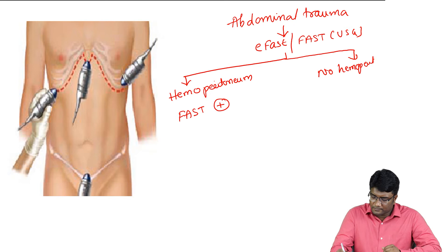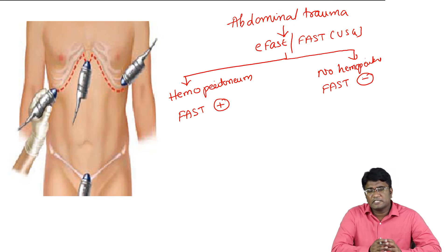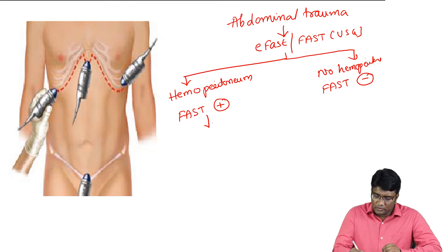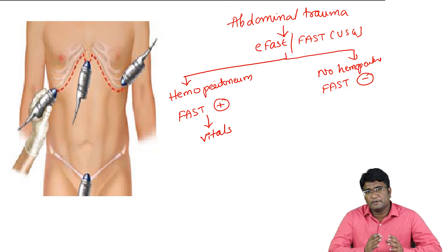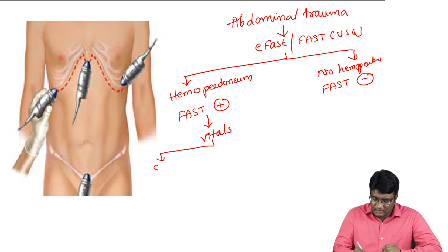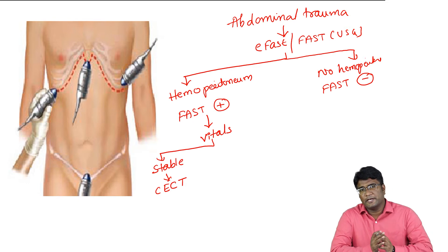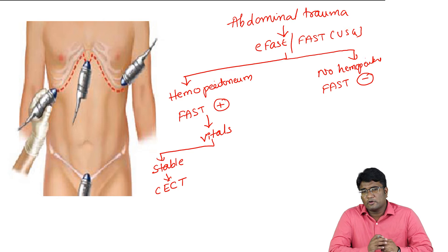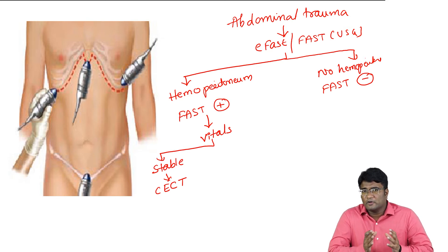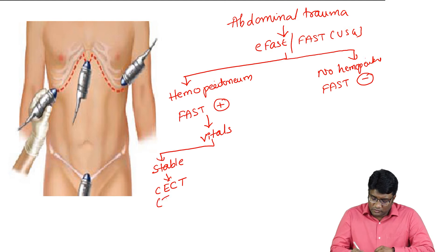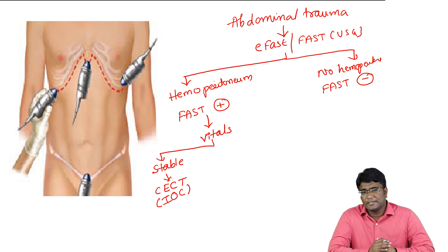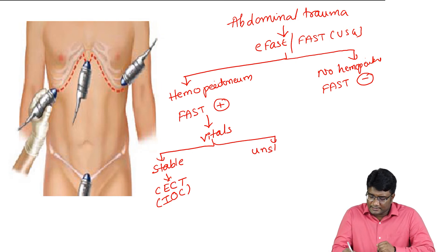If FAST is positive — if there is fluid in the abdomen on ultrasound — the next step is to check the vitals of the patient: blood pressure and pulse rate. If the vitals are stable, you can get a contrast-enhanced CT (CECT) done to identify exactly which organ is bleeding. FAST shows hemoperitoneum but does not specify whether it is a bladder, kidney, liver, or spleen injury. The investigation of choice in stable patients with abdominal trauma is contrast-enhanced CT.